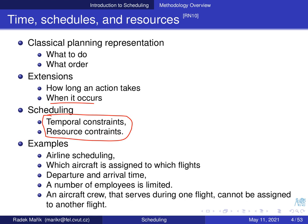An example is airline scheduling. You need to know which aircraft is assigned to which flights, departure and arrival times, and you need to assign employees — the crew. You have only limited resources of employees, and if an aircraft crew is serving on one flight, it cannot be present on another flight at the same time.